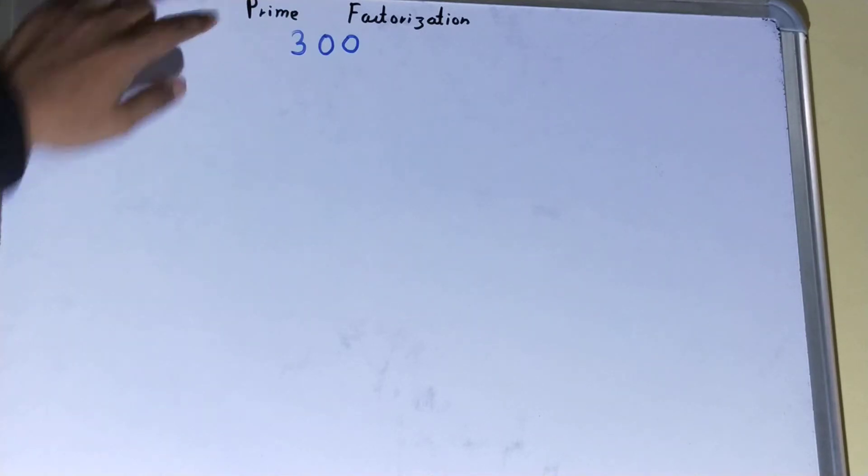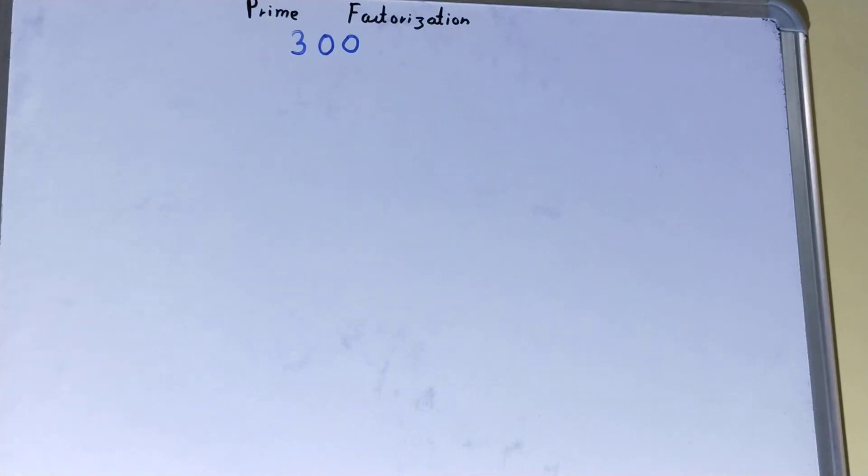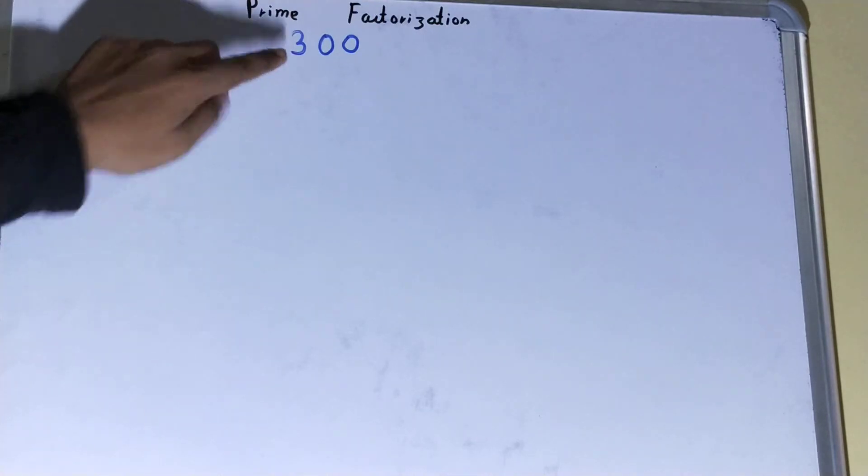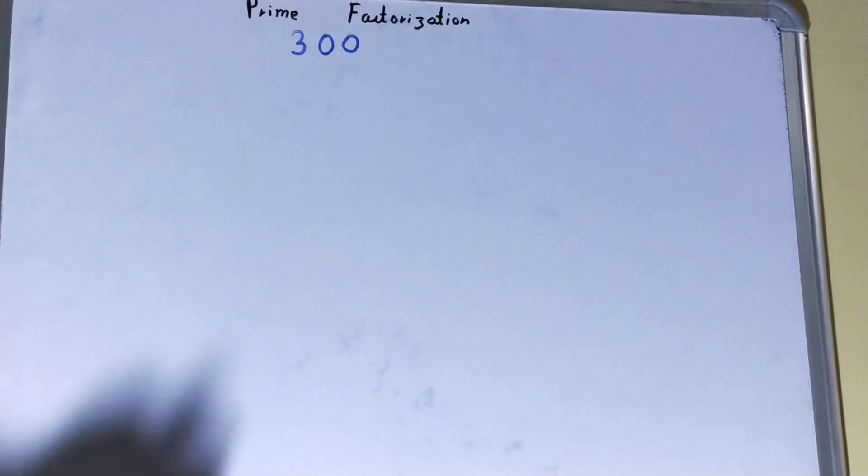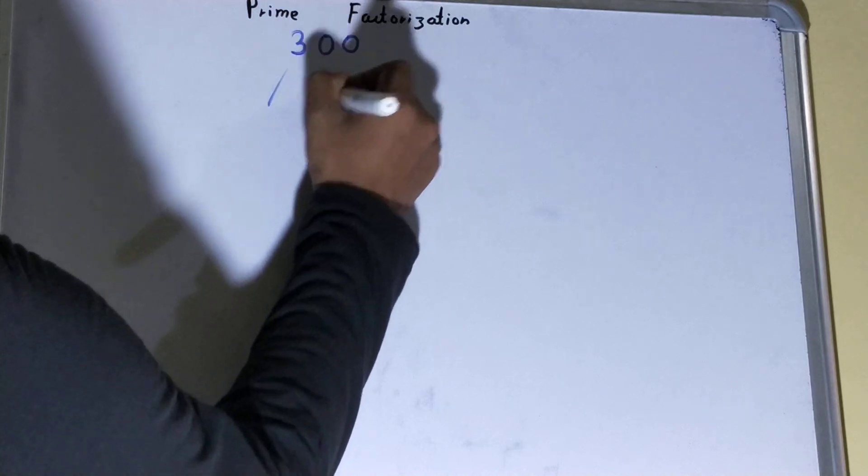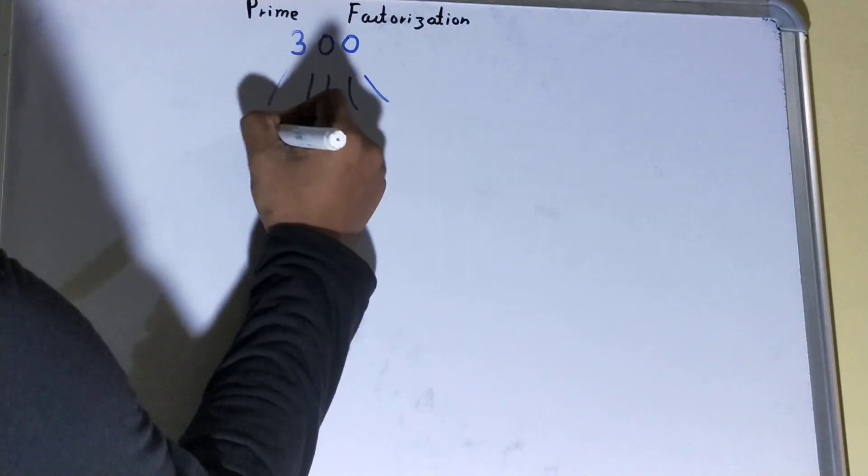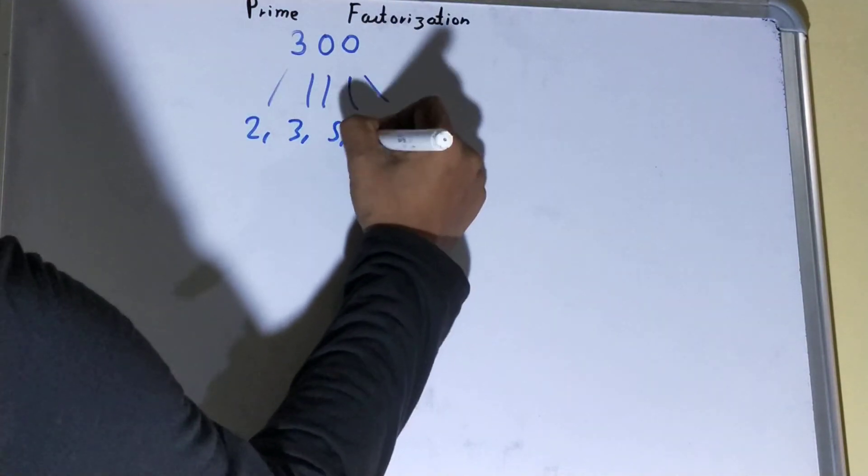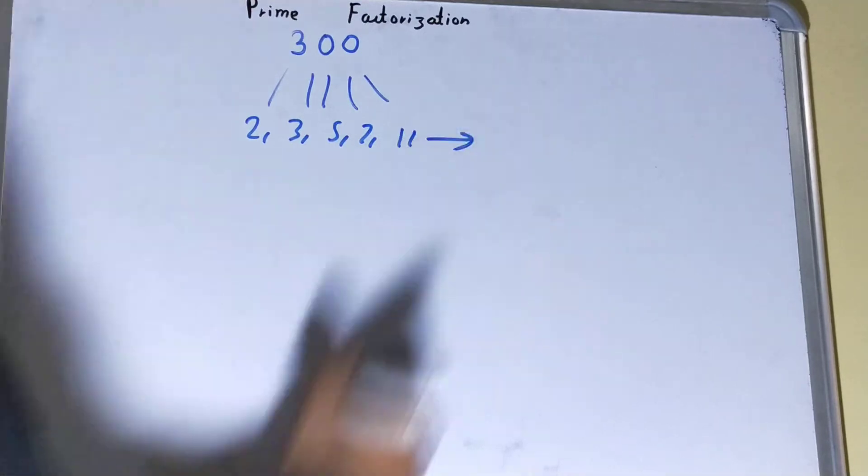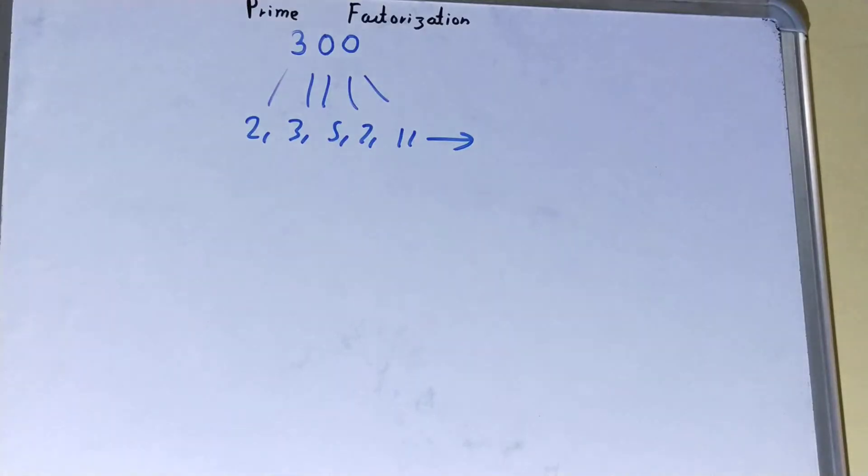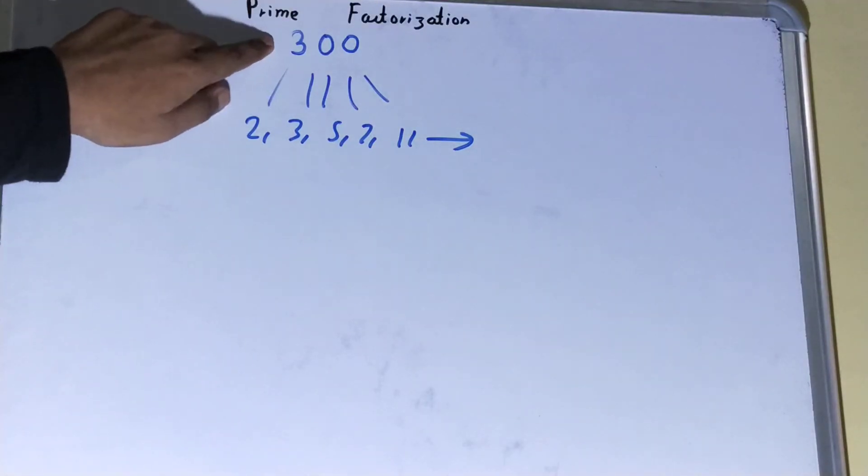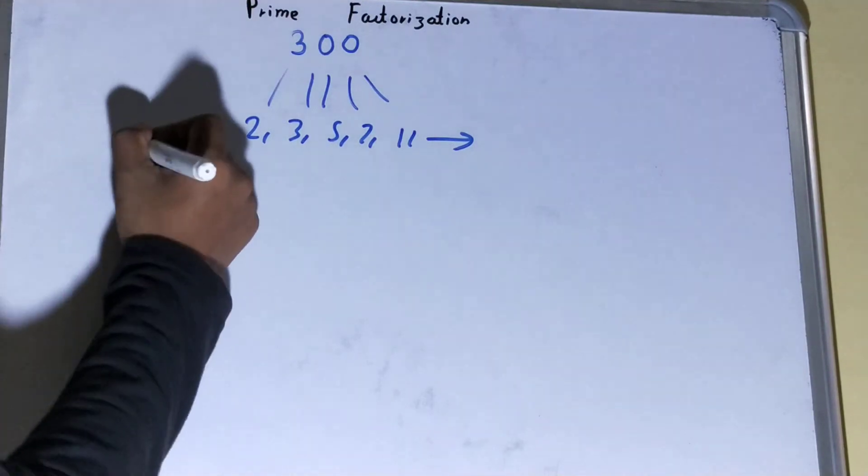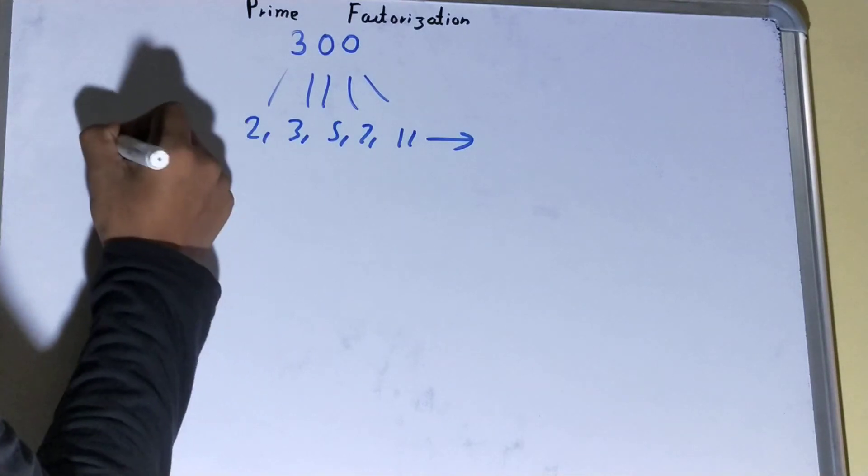If we talk about prime factorization, it is factorization of the number into a set of prime numbers or set of prime factors, like 2, 3, 5, 7, 11 and so on. The process of factorizing the number into a set of prime numbers is called prime factorization. Now let's quickly prime factorize this 300.